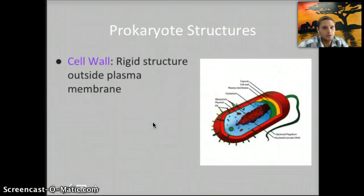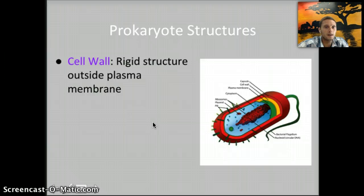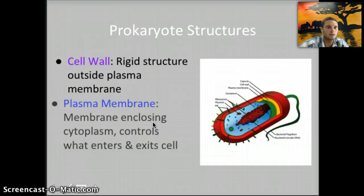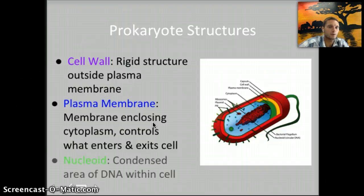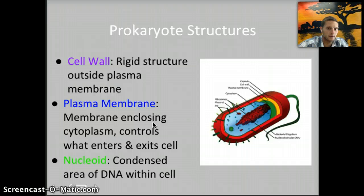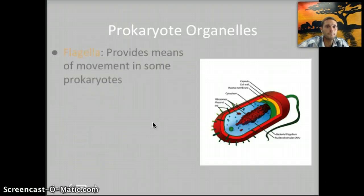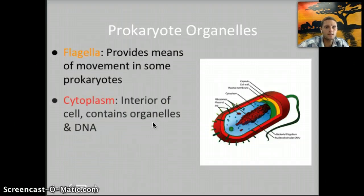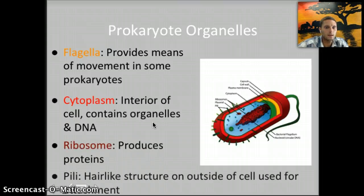Looking at some of these structures in a little bit more detail on what specifically they do, you could find this information in your textbook or online. Briefly: cell wall, rigid structure; the plasma membrane; and the nucleoid. If you'd like more time to write these down, please go ahead and pause the video. Also flagella, cytoplasm, ribosome, and pili.